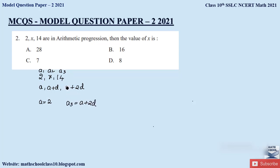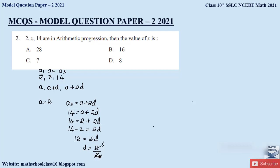Substituting A = 2 into the third term equation: 14 = 2 + 2D, so 12 = 2D, giving D = 6. Now we find the second term A2 = A + D = 2 + 6 = 8. Since A2 is given as x, therefore x = 8. The correct option is option D.